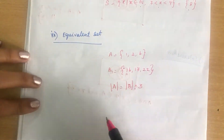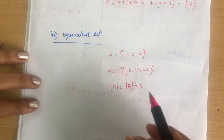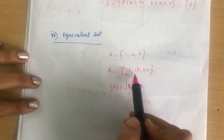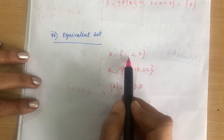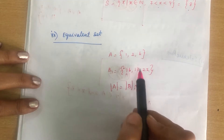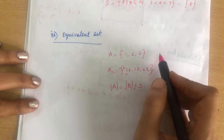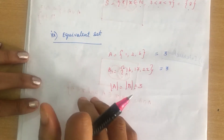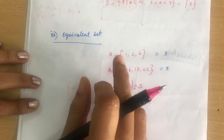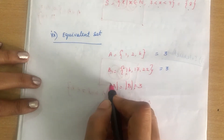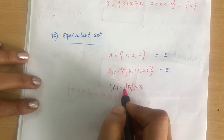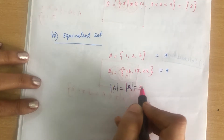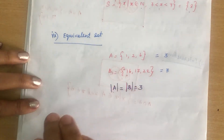Next is equivalent set. Equivalent set means both sets have the same number of elements, but not necessarily the same elements. For example, A = {1, 2, 6} and B = {16, 17, 22} — both have 3 elements. We use cardinality notation: |A| = |B| = 3. So these are all the types of sets.